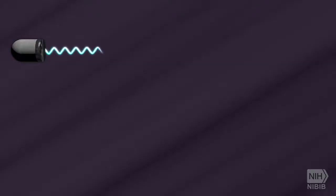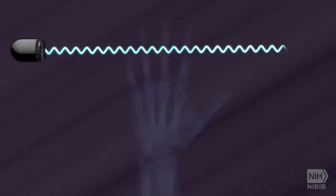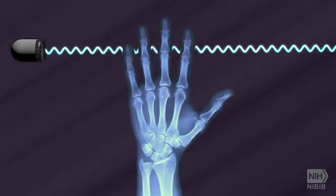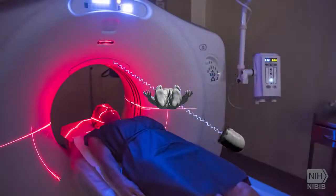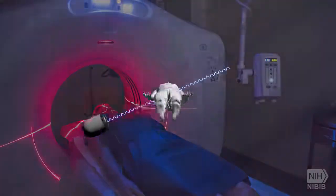A conventional x-ray uses a fixed tube that sends x-rays in only one direction, while a CT scanner uses a motorized x-ray source that shoots narrow beams of x-rays as it rotates around the patient.